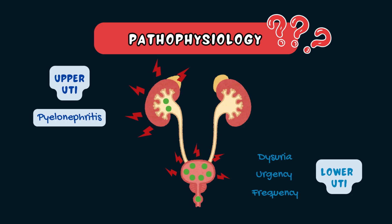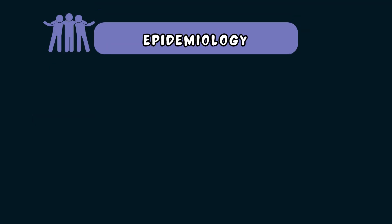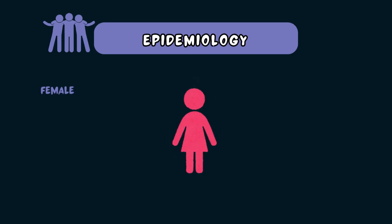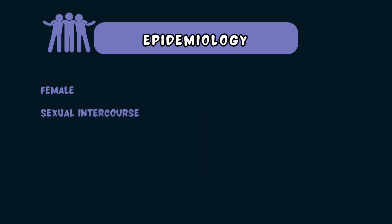If the infection reaches the kidneys, this can cause flank pain, fever, and systemic illness. UTIs are more common in women — about 50–60% of women will have at least one UTI in their lifetime. This is because women have a shorter urethra, which means bacteria have a shorter distance to travel to reach the bladder. Sexual activity can also introduce bacteria into the urethra, especially from the perineal area.